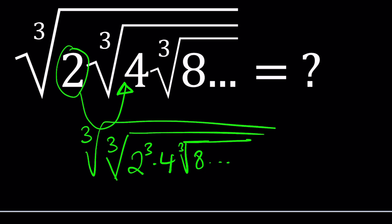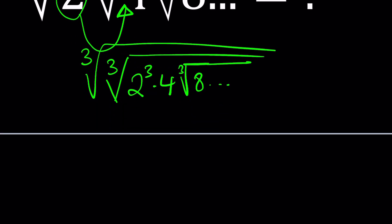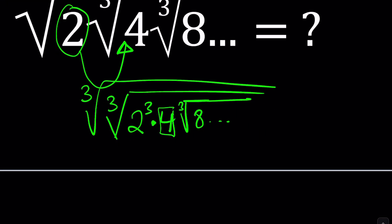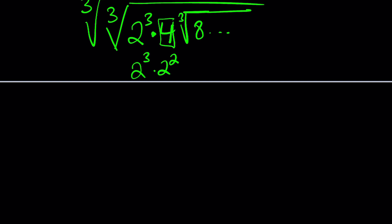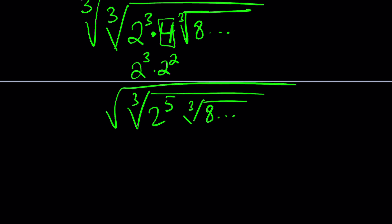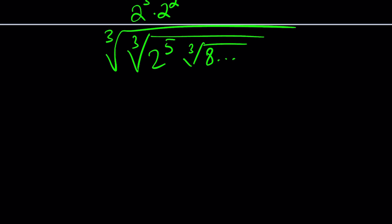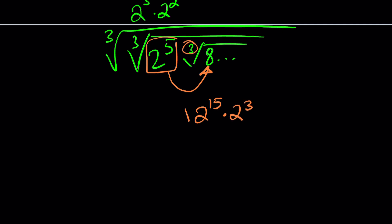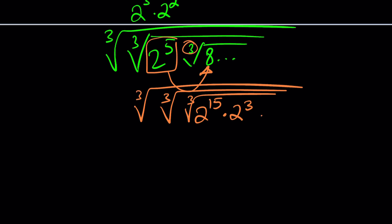Notice that we have the 2 under two cube roots, which means that's actually going to be the 9th root. But before that, we can go ahead and take this 4 and combine with 2 to the 3rd. Because we can write 4 as 2 to the 2nd power, these two will combine to 2 to the 5th. So that gives us the cube root of 2 to the 5th, multiplied by the cube root of 8, and so on. Now you can either turn this into the 9th root, or continue with 2 to the 5th — take that and put it inside, but this time multiply the exponent by 3.